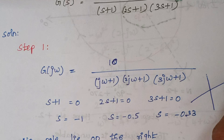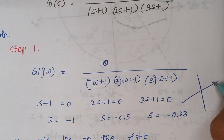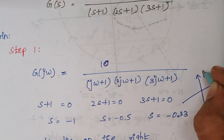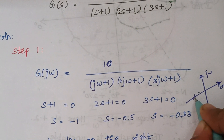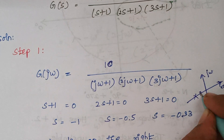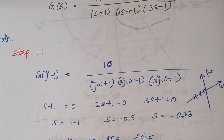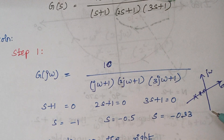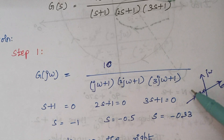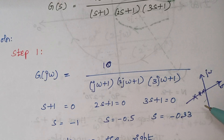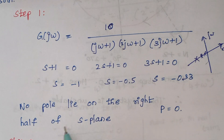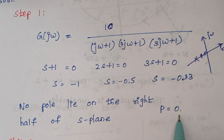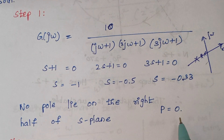Let this be our S plane. We are going to locate these values: the first one is -1, the next is -0.5, and the next is -0.33. Is there any poles which lie on the right hand side of the S plane? No, because all the poles are lying on the left hand side. So the number of poles lying on the right half of the S plane is 0. This is our first step.